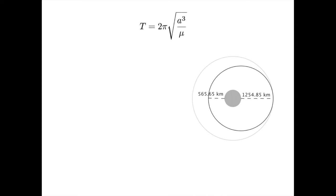Recall that the semi-major axis is just the average of the smallest and largest orbital radii. That is, it equals r1 plus r2 all divided by 2. In the tutorial, I used an orbit with a periapsis of 565.65 kilometers and an apoapsis of 1,254.85 kilometers.